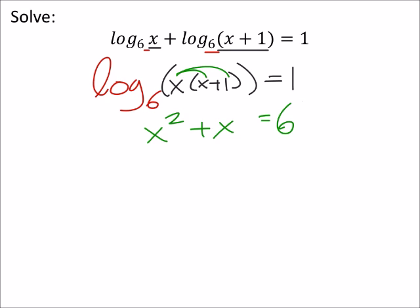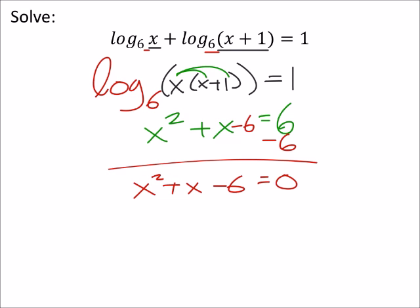Six to the power of one is just six. This is starting to look like a quadratic which is great because in order to make it zero, subtract six from both sides, that gives us x squared plus x minus six equals zero.